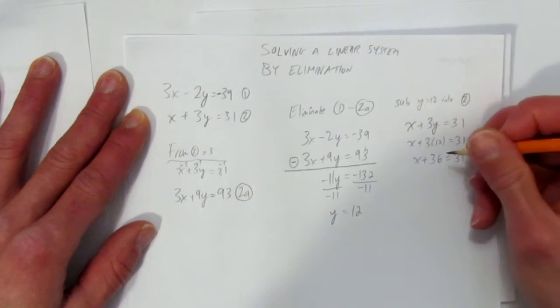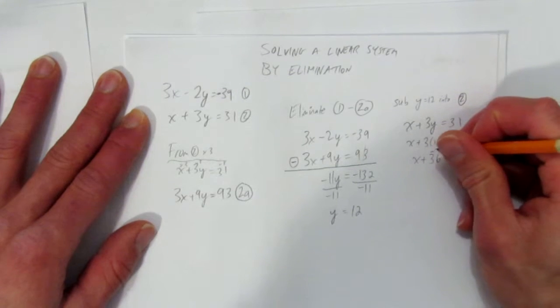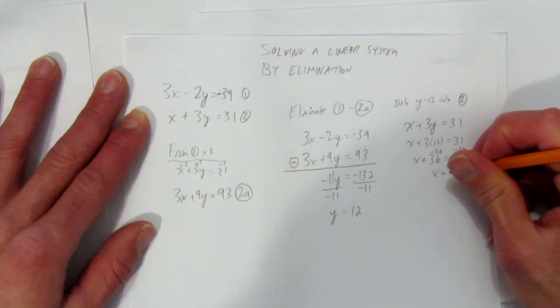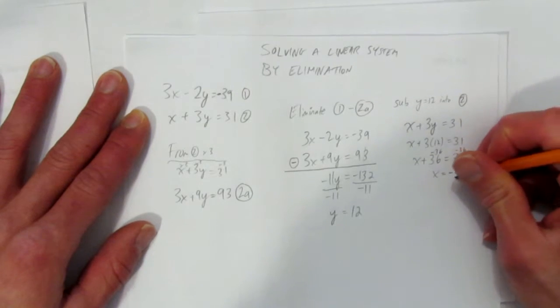And finally, how do you get x by itself? Subtract 36 both sides, and you get x equals, you can do this in your head or on a calculator, negative 5.